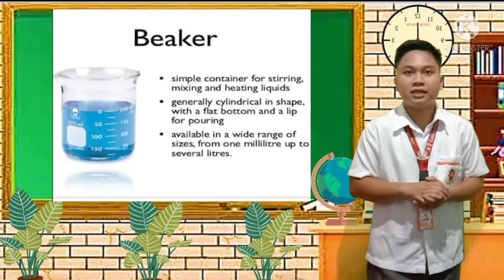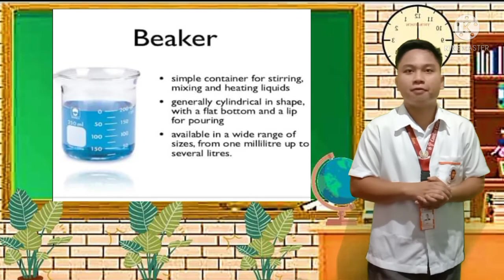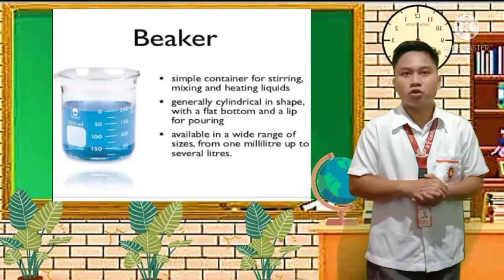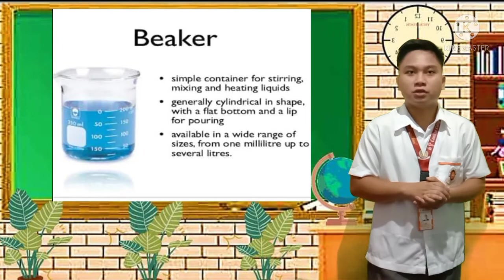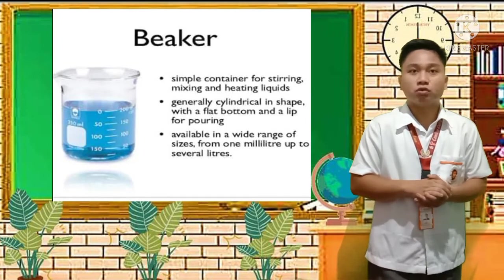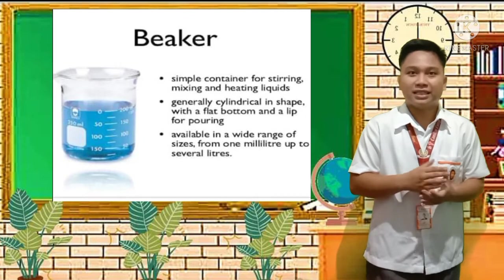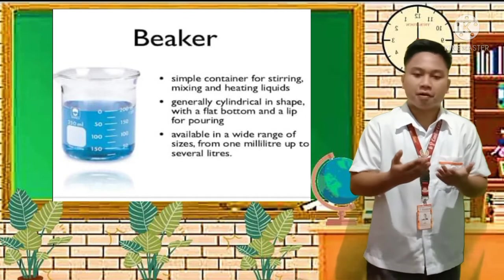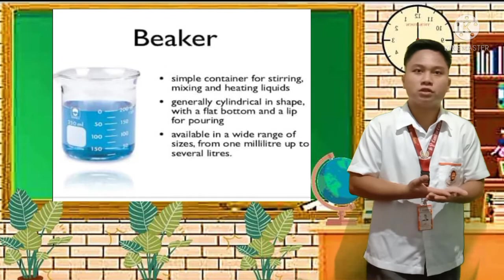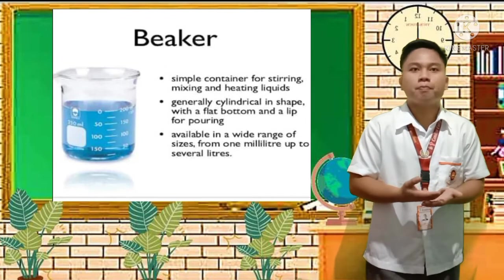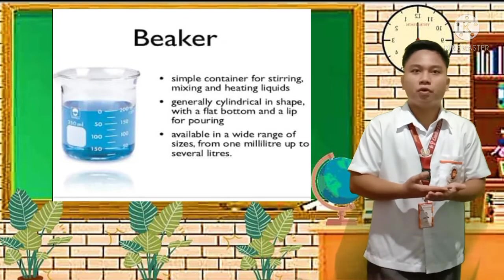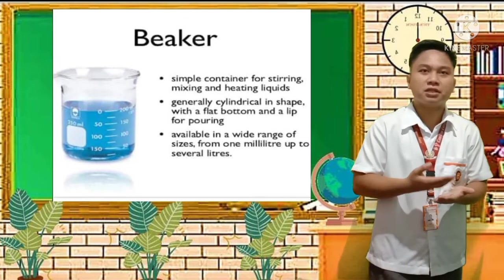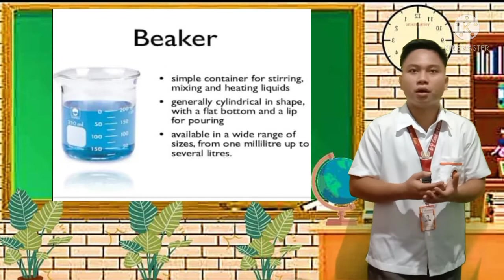The beaker is generally cylindrical in shape with a flat bottom and a lip for pouring. The flat bottom makes the container stable on a surface — it won't tip over easily — which is important for safety so the substances being mixed in your experimentation don't spill.